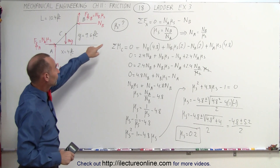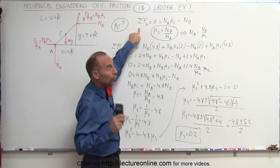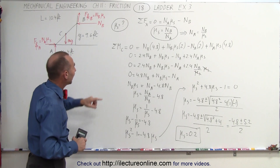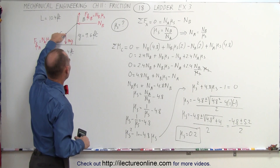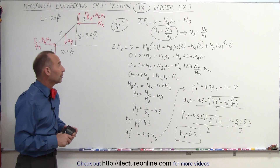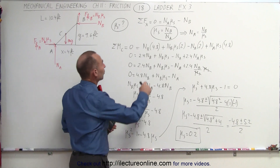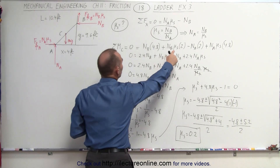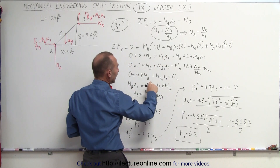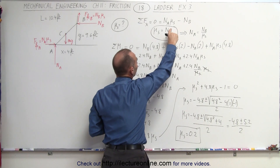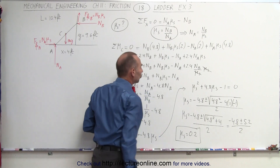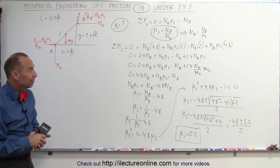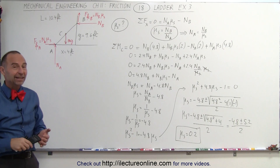In summary: we found μs in terms of the two normal forces by taking the sum of forces in the x direction, without needing the y direction. Taking the moment about point C eliminated mg since we didn't know the ladder's weight. With the moment equation and the ratio Nb/Na = μs, a bit of algebra turned the problem into a quadratic equation, giving us the coefficient of static friction.